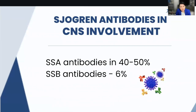In Sjögren that affects your brain and your spine, only 40% to 50% of patients will have a positive SSA antibody, and only 6% will have a positive SSB antibody. This is important because it makes the diagnosis very challenging.